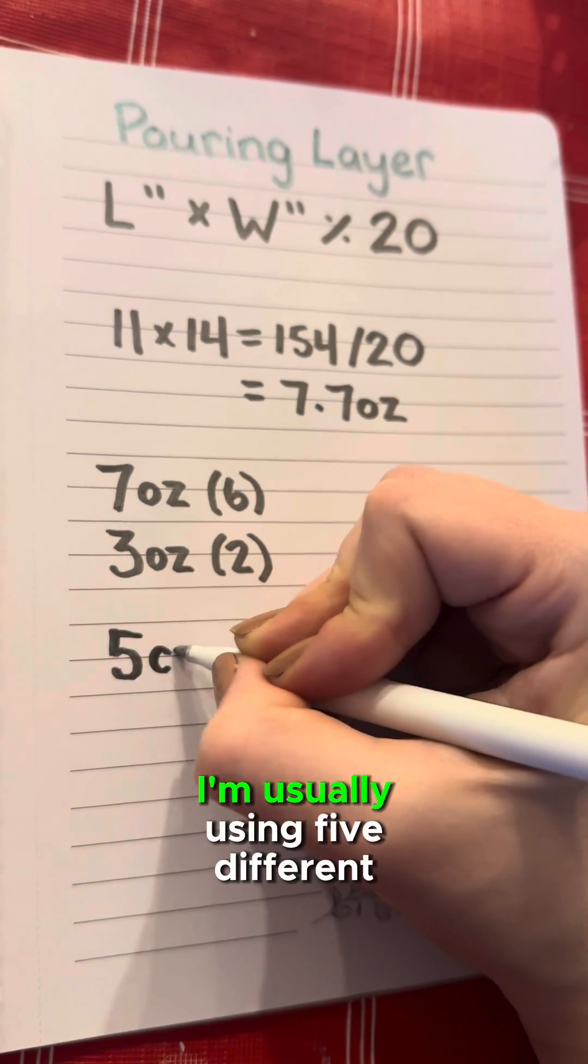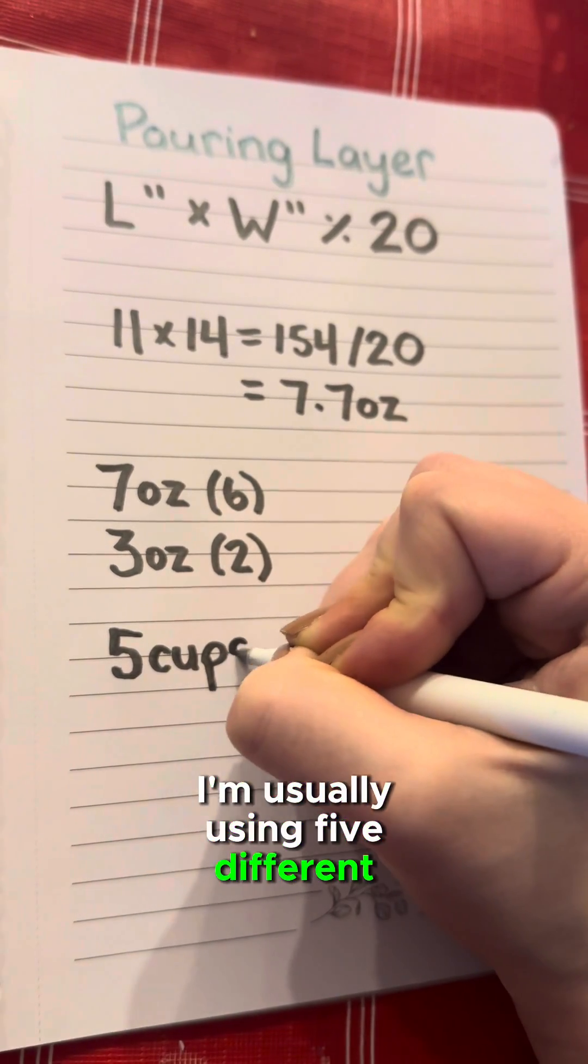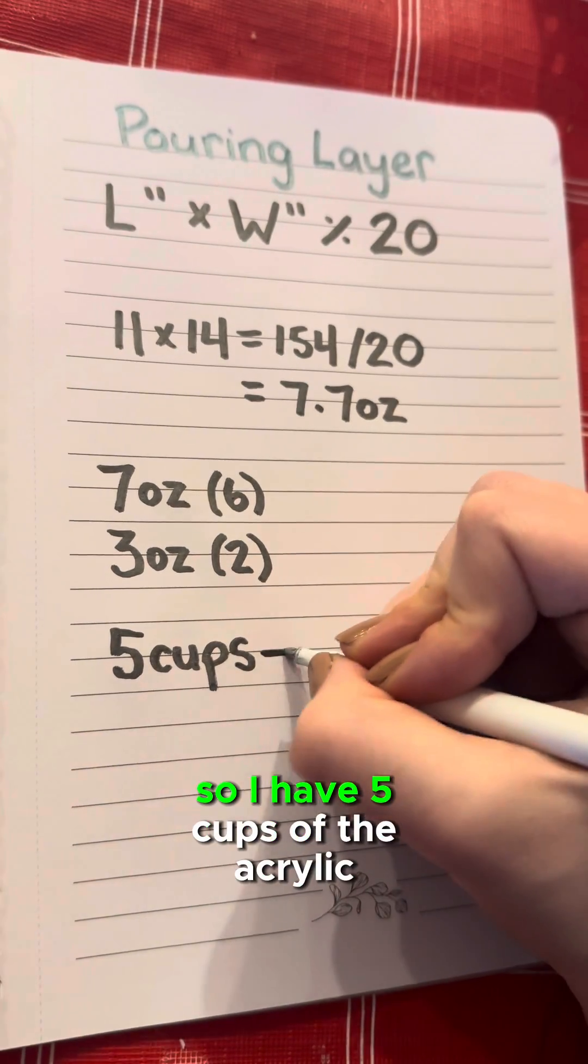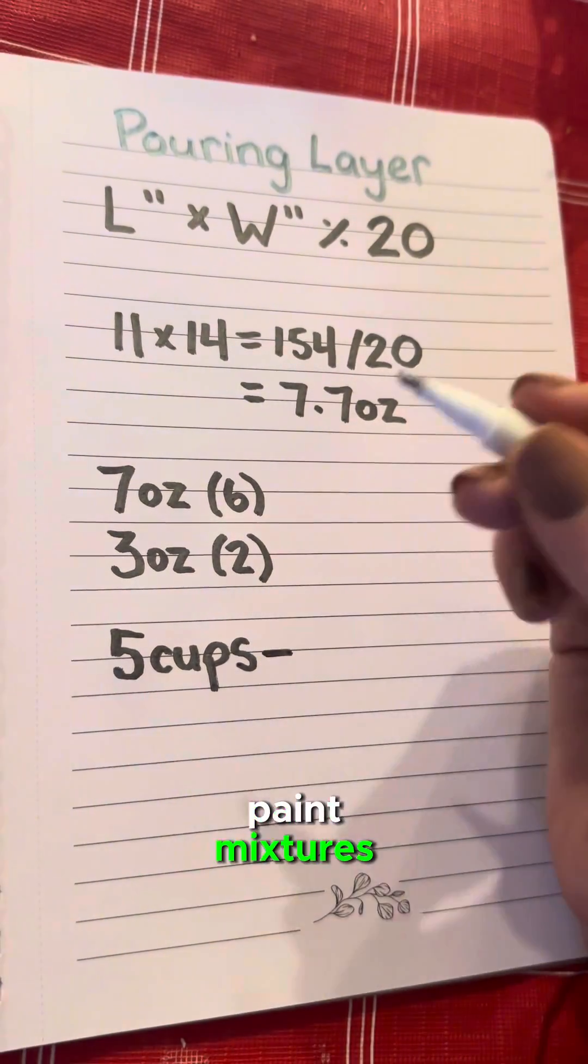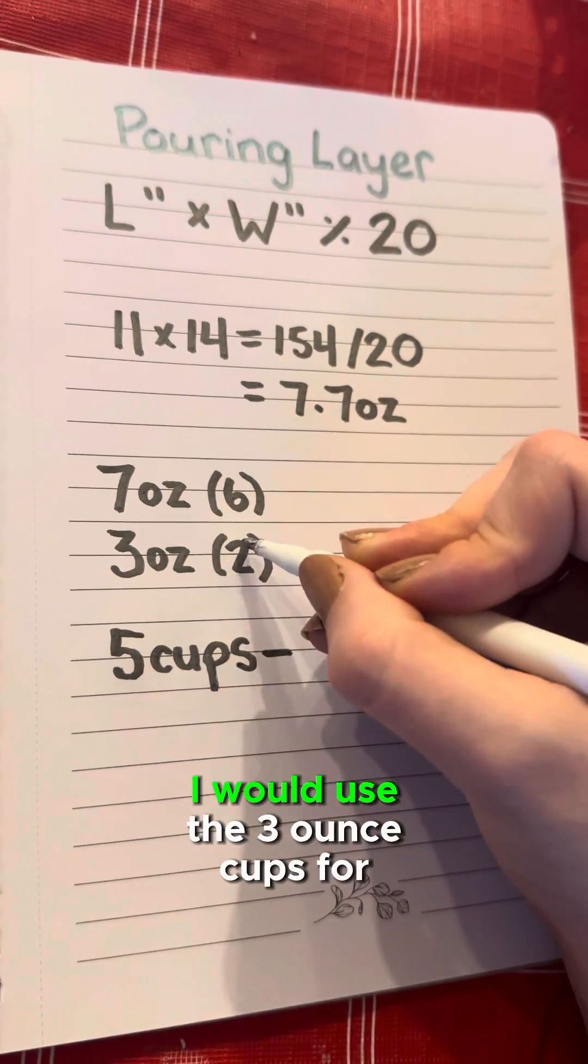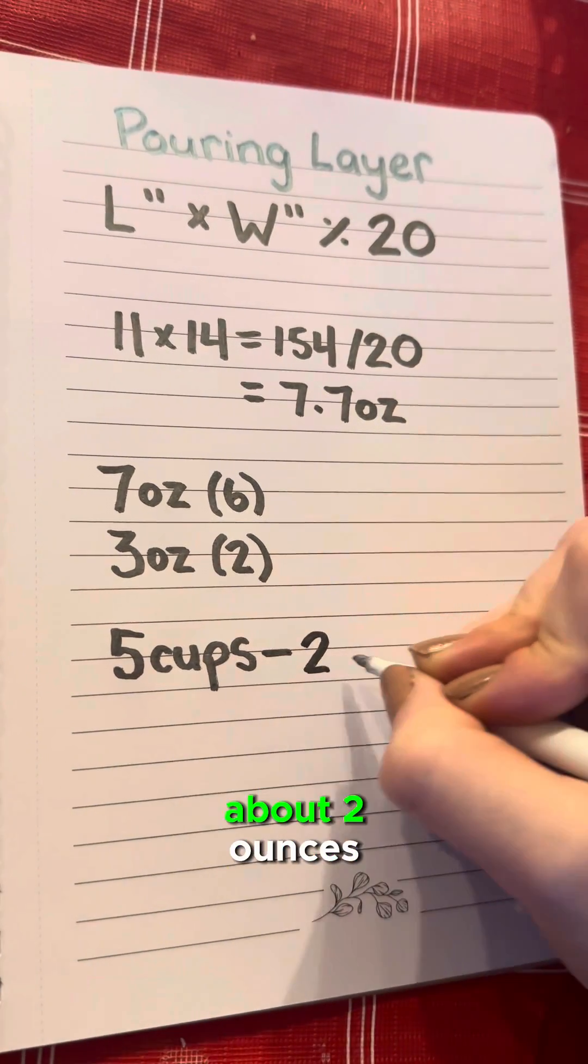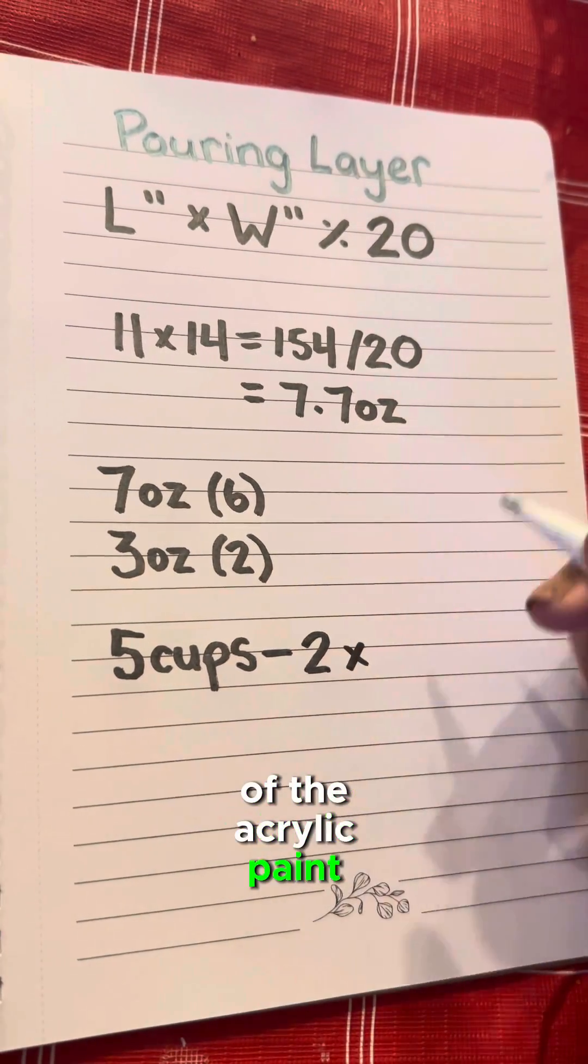With this layer I'm usually using 5 different colors. So I have 5 cups of the acrylic paint mixtures. I would use the 3 ounce cups for that which would mean each one has about 2 ounces of the acrylic paint mixture.